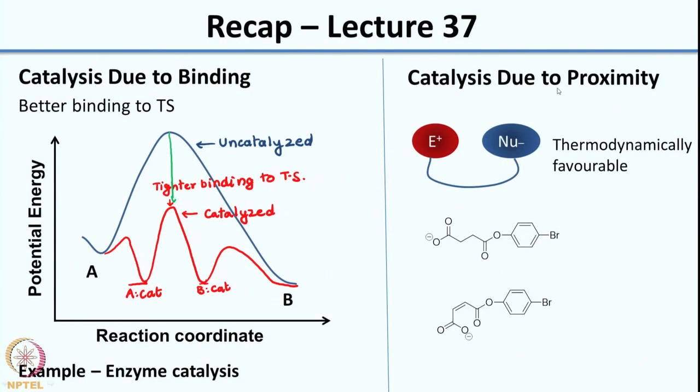Then towards the last part we had looked at catalysis due to proximity. What happens is when you have a reaction in a reaction flask you have the molecules far away from each other. To improve the probability of collision it makes more sense to have them tied together or bound together — in a way it is similar to the binding effect. Another advantage of binding is that it is thermodynamically more favorable because initially if the reactants are unbound there is greater disorder in the system, and once you form the transition state where they are bound it is not entropically favorable. Whereas if you have the reactants already bound the degree of disorder is lesser in the system to start with, and then thermodynamically it becomes more favorable.